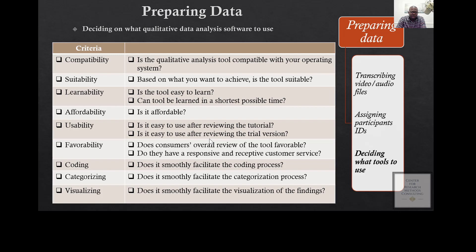Also consider usability by looking at tutorials. You also have to think about coding — can you easily identify significant information, develop codes, and connect that information to the codes? Can you categorize? Can you visualize? These are the things you have to consider when deciding which qualitative data analysis software is right for you.